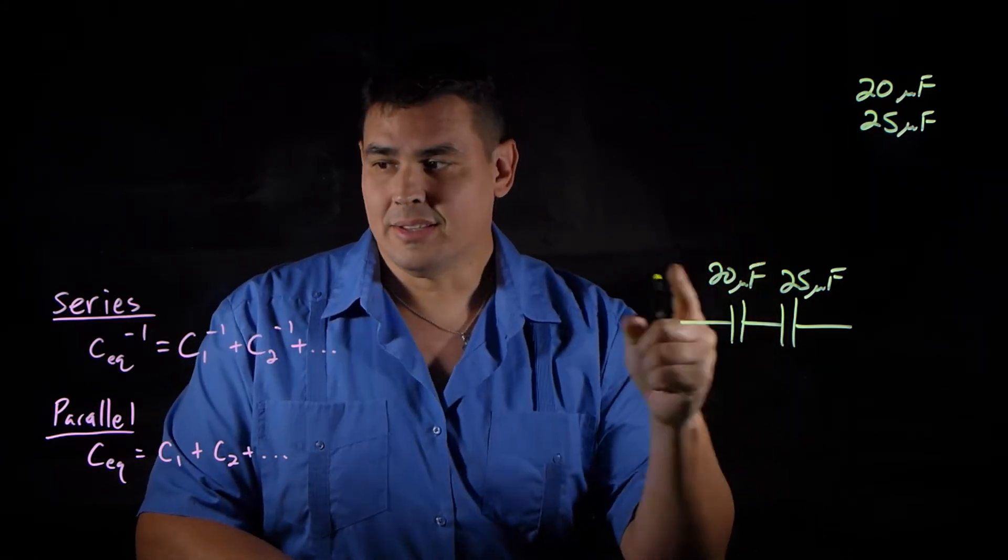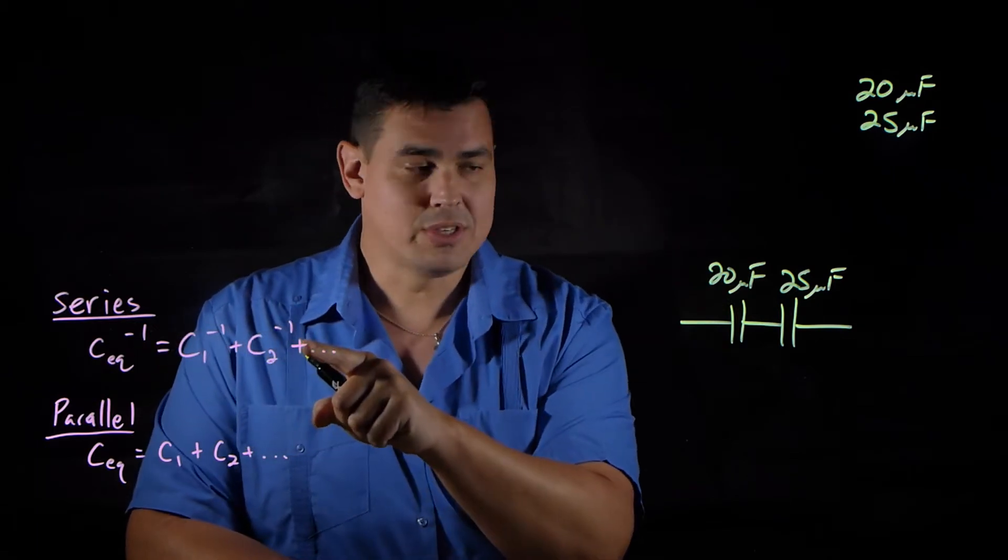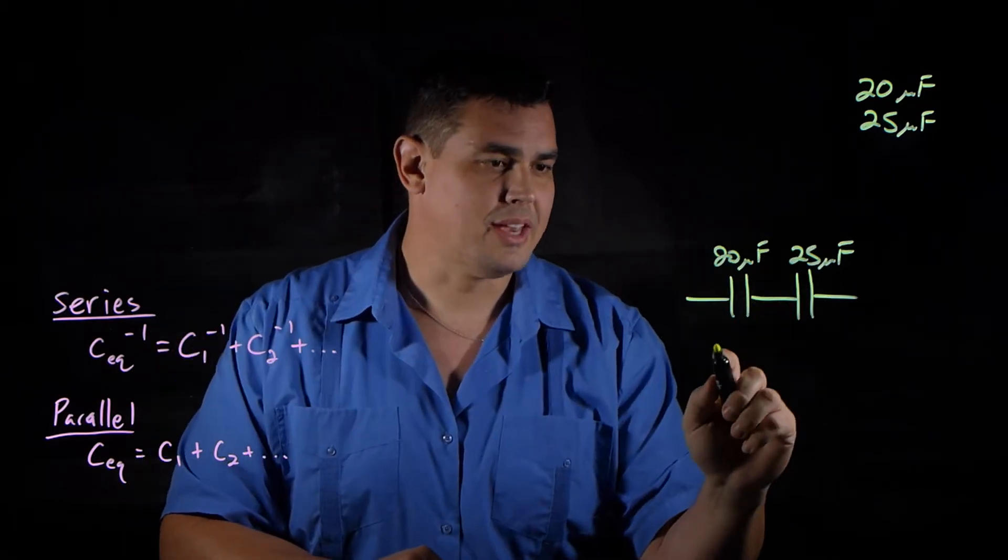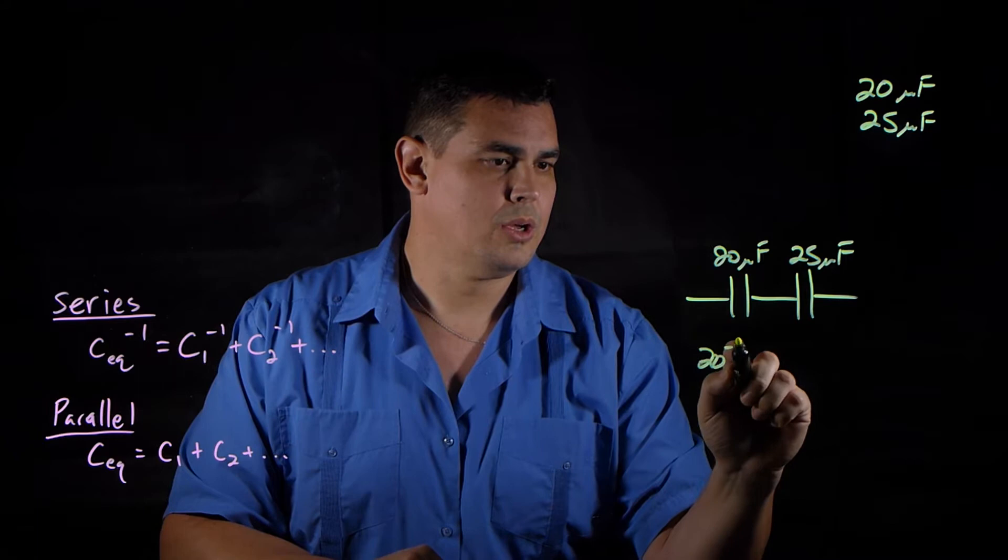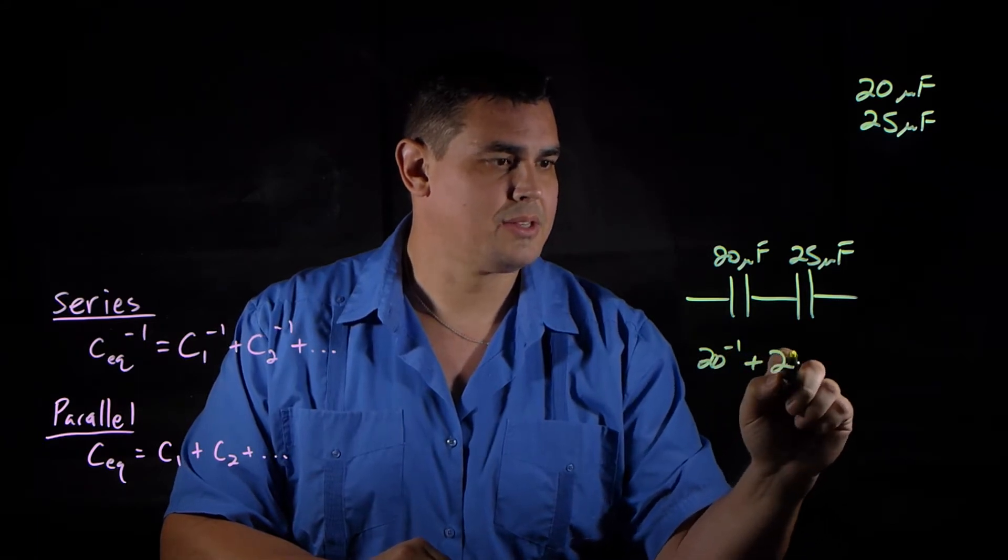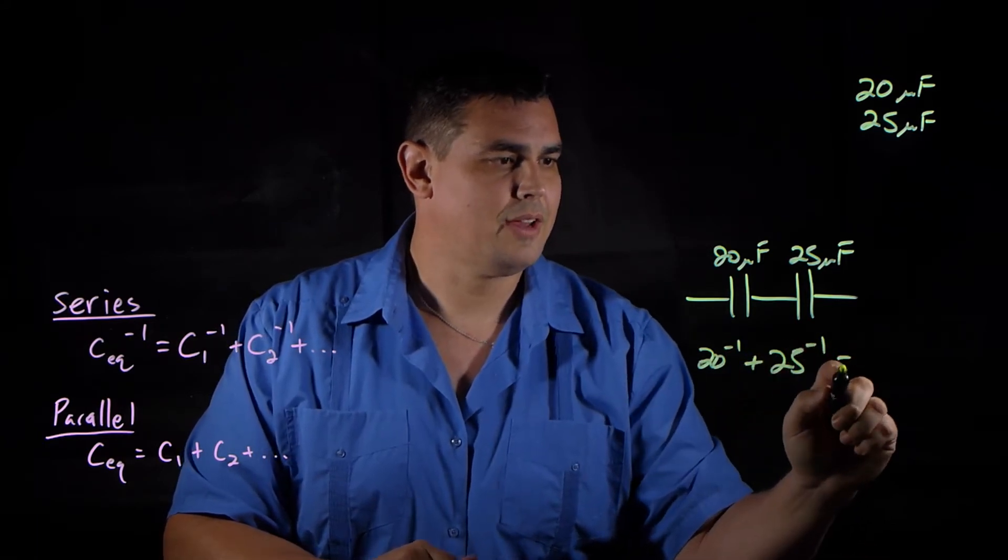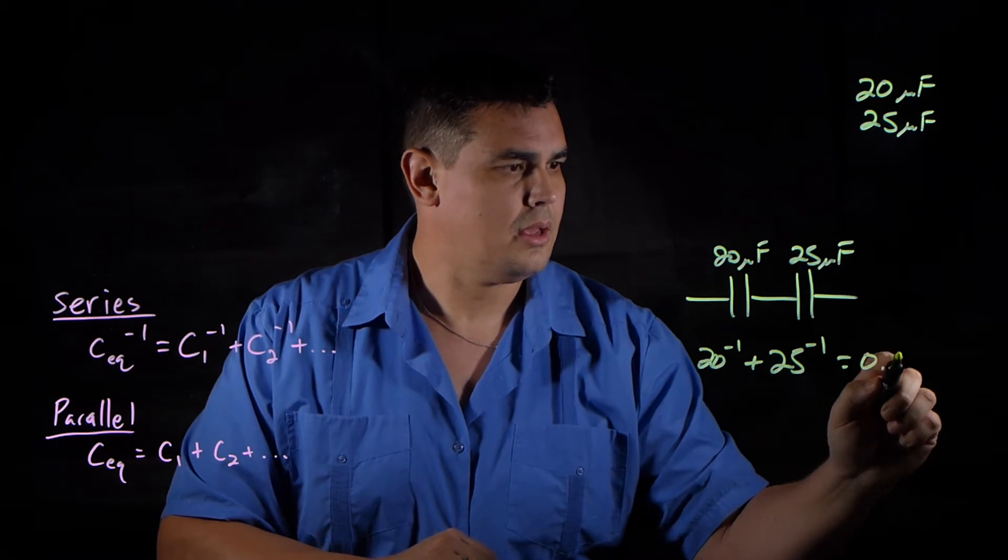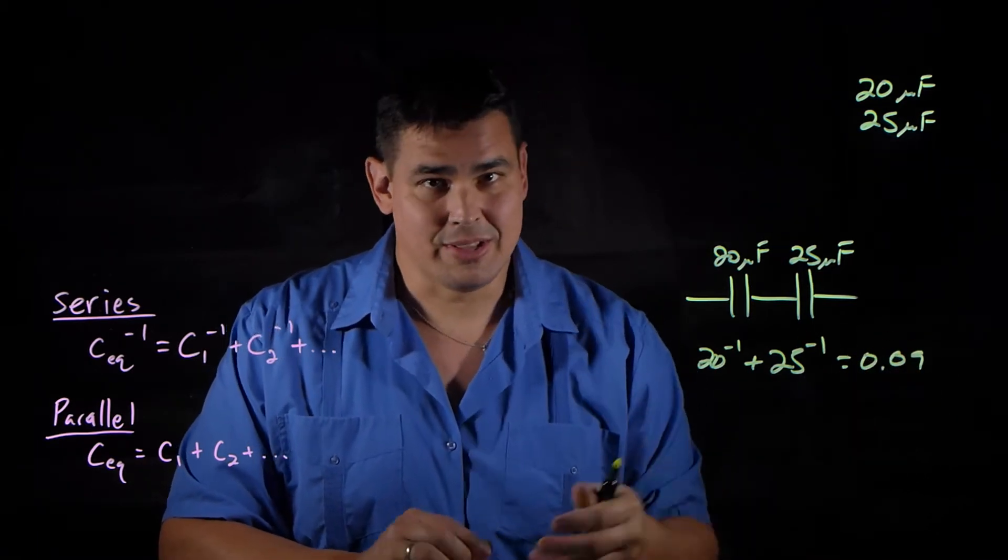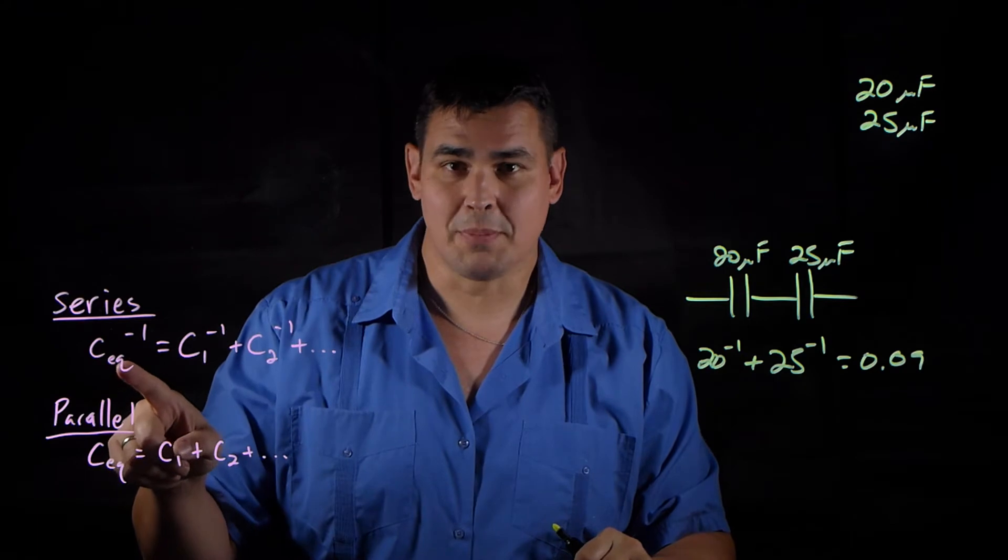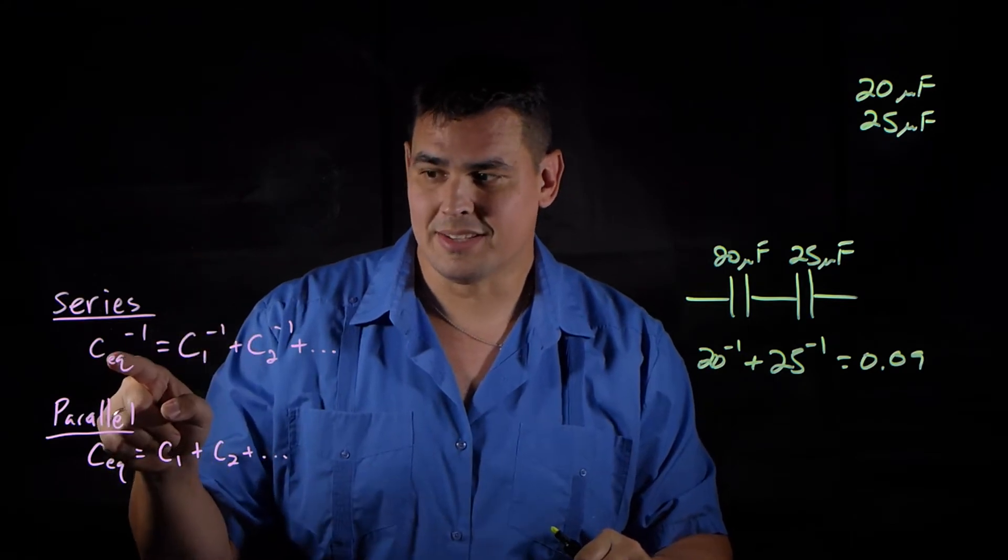So when you add in series, you're just adding the reciprocals. So in this case, I would do the reciprocal of 20 plus the reciprocal of 25, and that's going to give me 0.09. And so that's not your answer. That's the mistake a lot of people make. They don't take the reciprocal of the equivalent capacitance at the end.